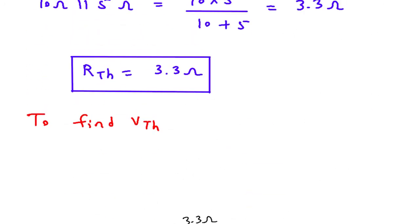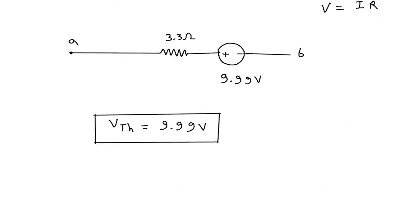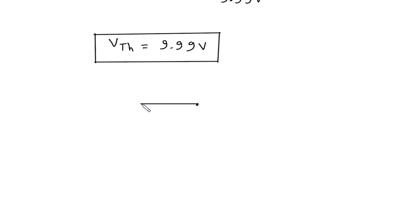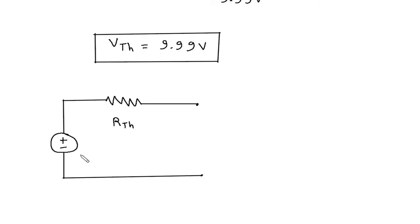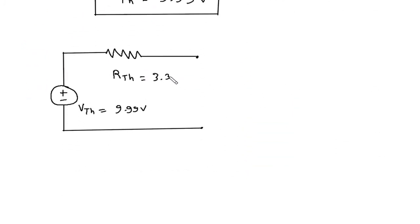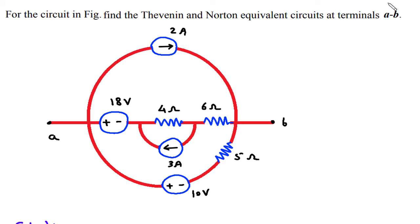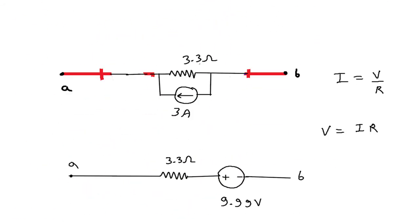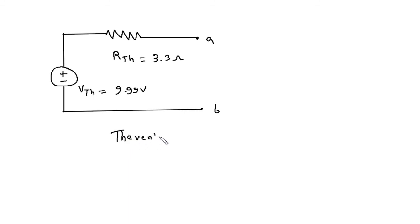RTH is equal to 3.3 Ohm. From these values we can draw the Thevenin equivalent circuit: RTH in series with VTH. VTH equals 9.99 Volt and RTH equals 3.3 Ohm, with terminal A and terminal B. This is the Thevenin equivalent circuit.